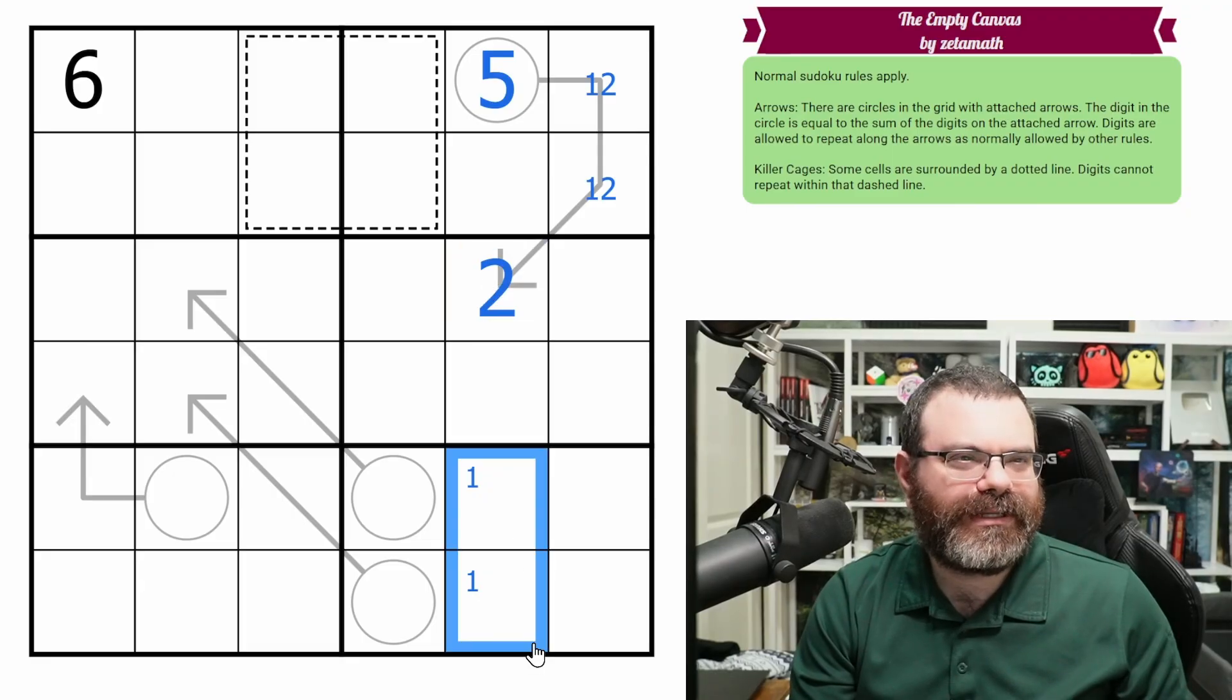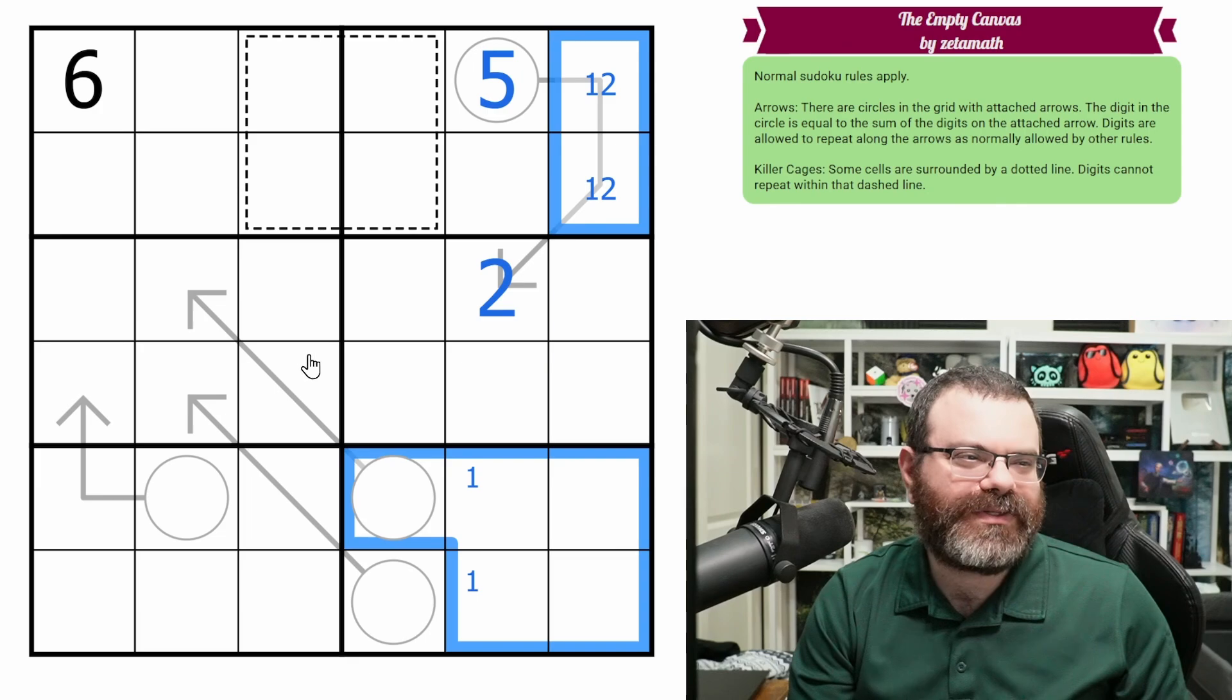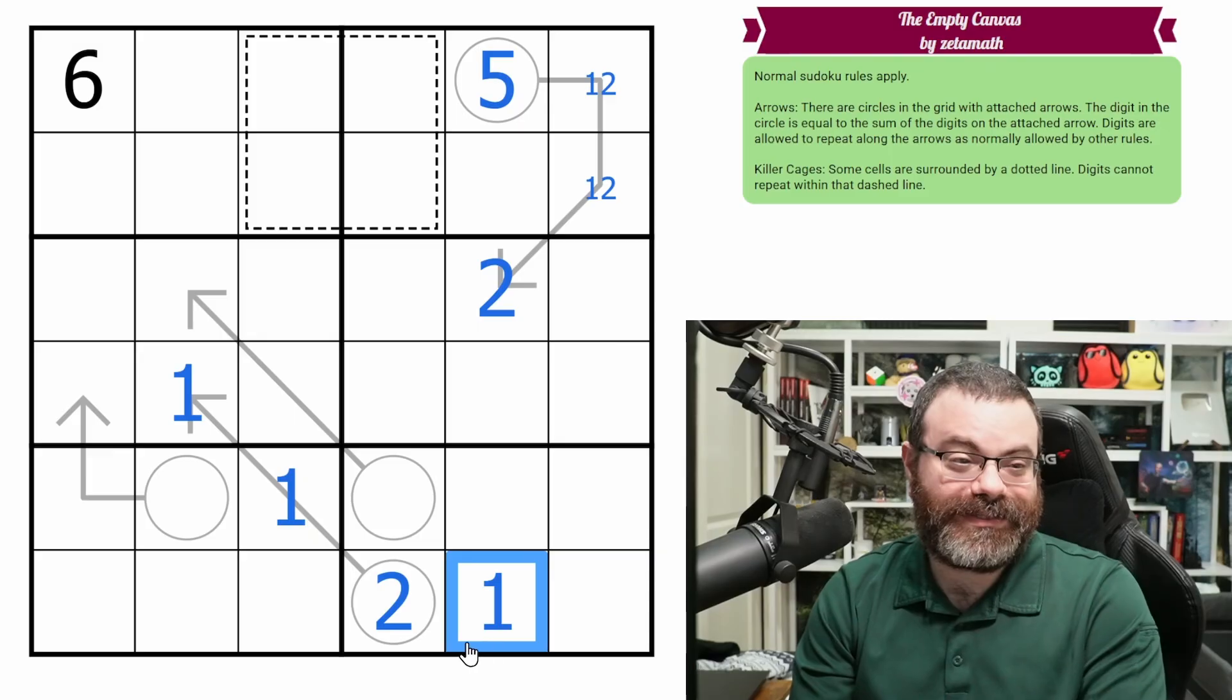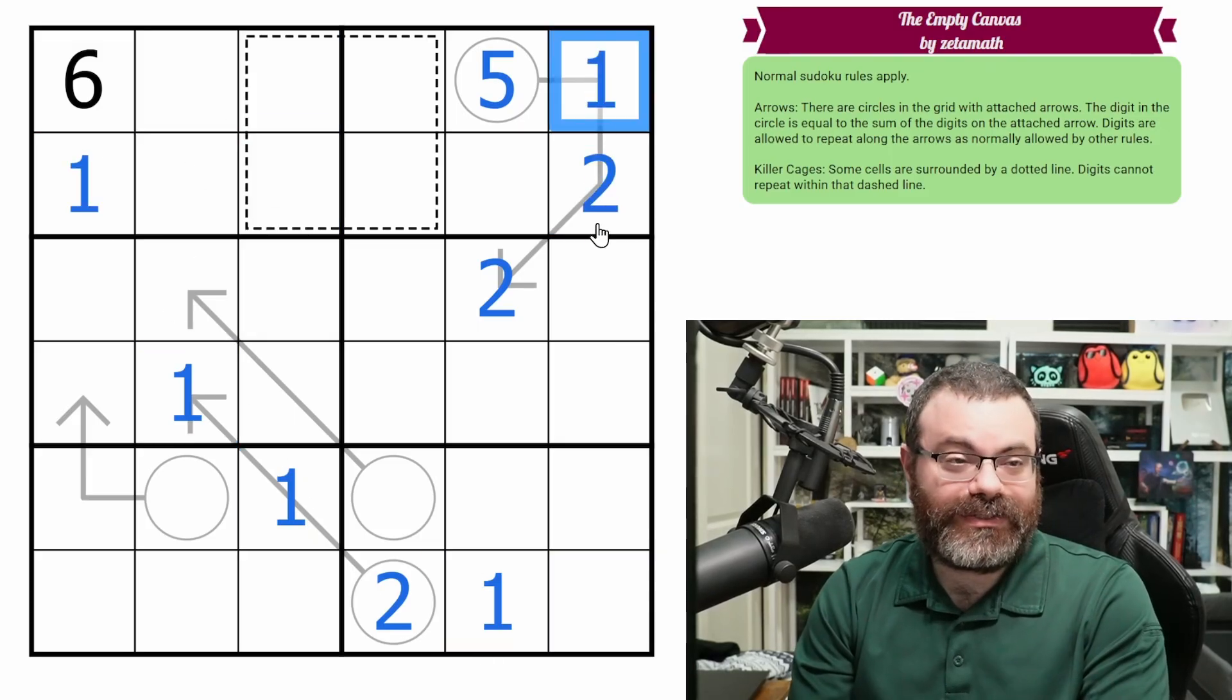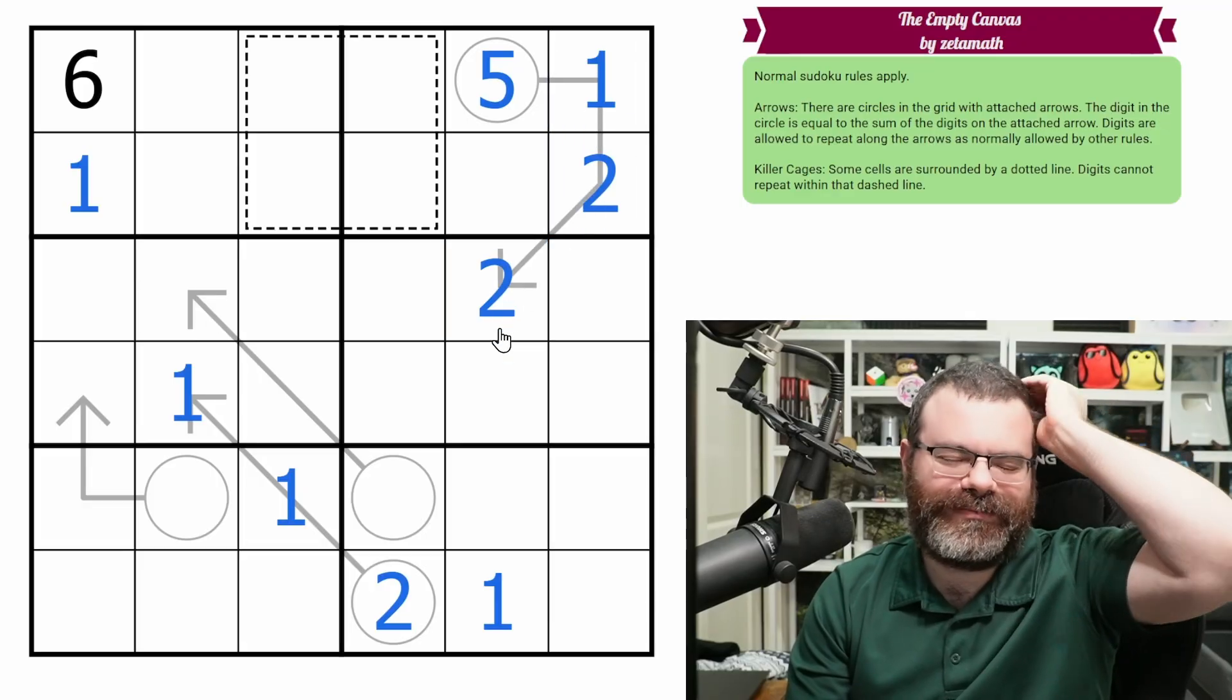This 2 looking down. This 2 looks down. And this can't be a 2 because the sum of these add to at least 3. But this can be a 2 because we can do 1 and 1 here, and that places this 1. It places the 1 in this box. These look up. It gives me a 2 in 1 there.